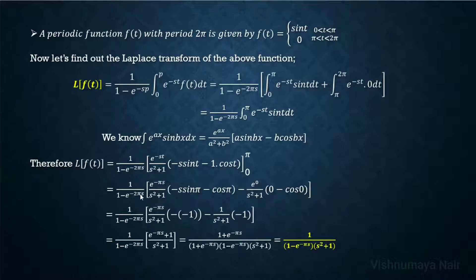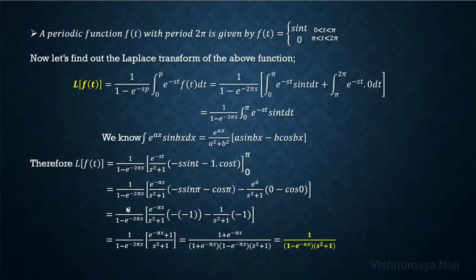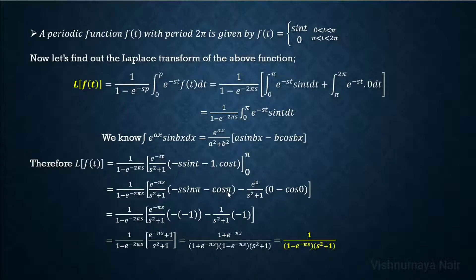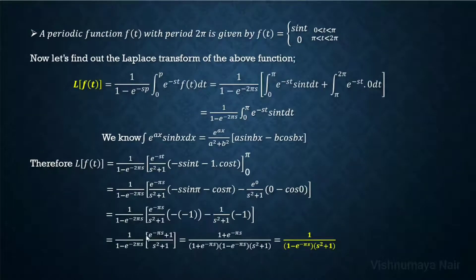Applying the limits: at t equals π, we get e raised to minus πs over (s squared plus 1) times (minus s sin π minus cos π). Sin π is 0 so that term vanishes, and cos π is minus 1, so minus cos π gives plus 1. At t equals 0, we get 1 over (s squared plus 1) times (0 minus cos 0) equals minus 1 over (s squared plus 1). Combining, we get 1 over (1 minus e raised to minus 2πs) times (e raised to minus πs over (s squared plus 1) plus 1 over (s squared plus 1)), which equals (e raised to minus πs plus 1) over (s squared plus 1).